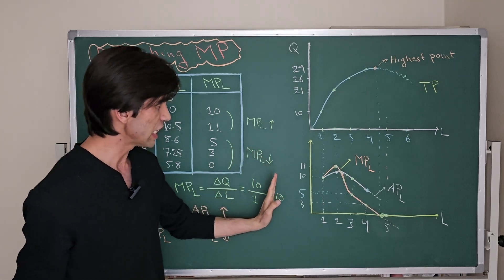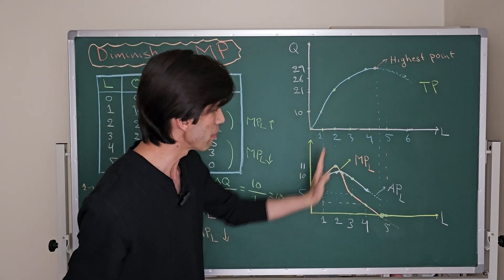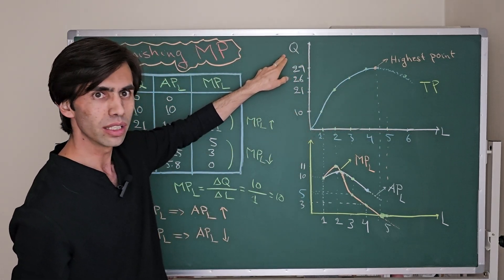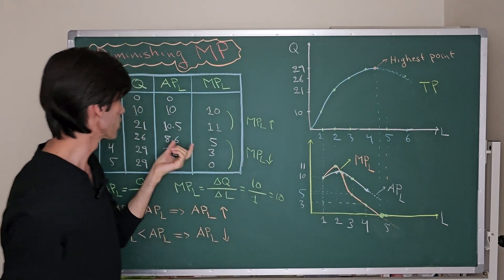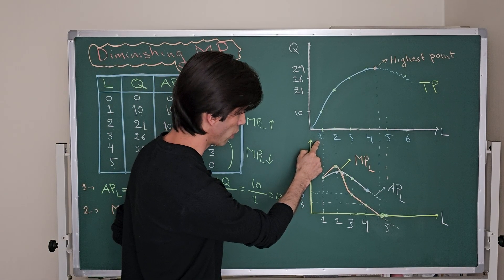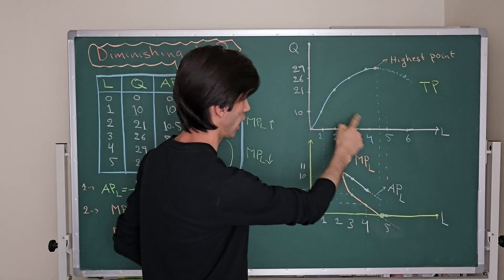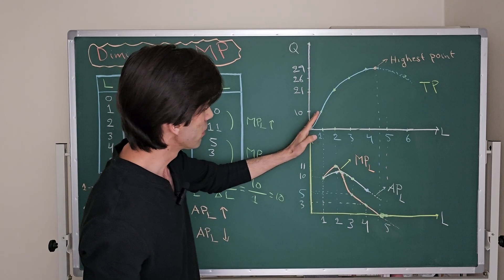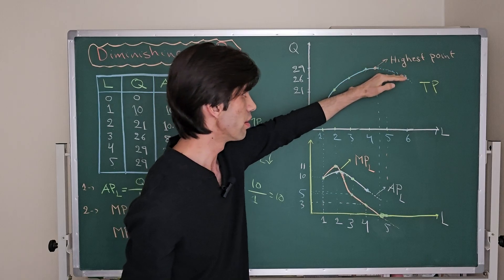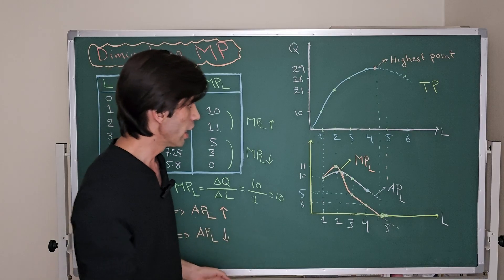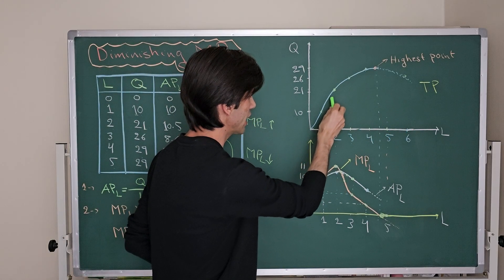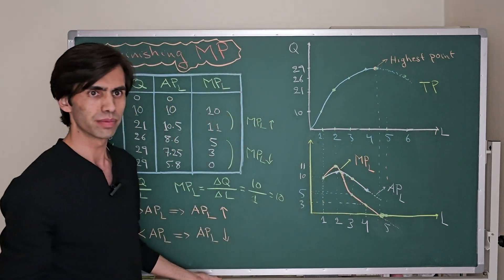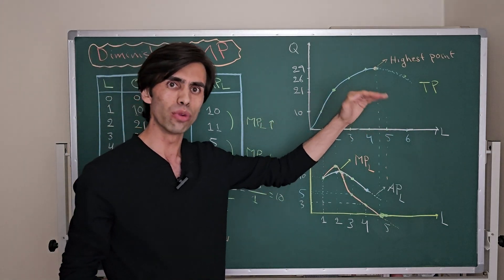In order to find the relationship, let's look at the curve of each measure. When we draw the curve of total product, the horizontal axis is labor and the vertical axis is quantity of pizza. With one employee you produce 10, two employees 21, three employees 26, four employees 29, five employees 29, and six employees maybe 26. So the total product curve is not linear — it increases up to some point, then increases at a decreasing rate, reaches the highest point, and then decreases.